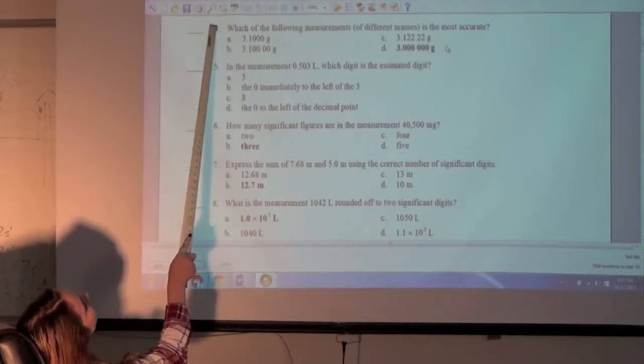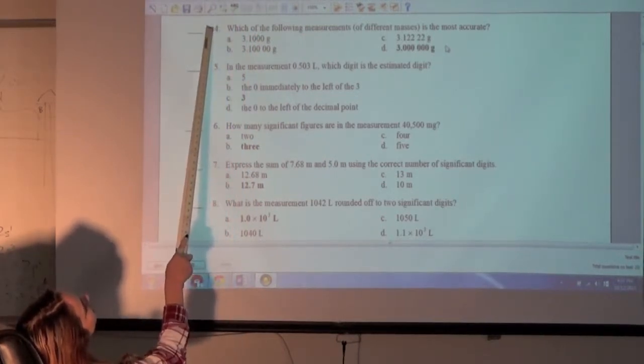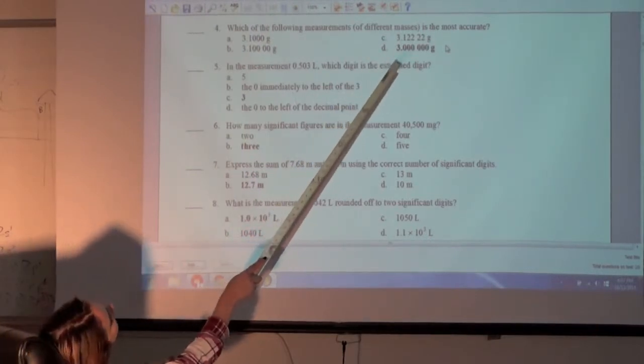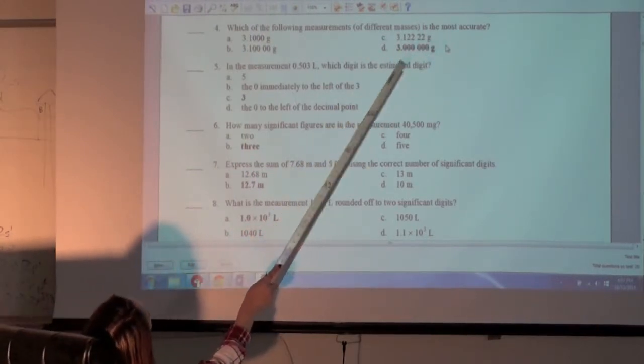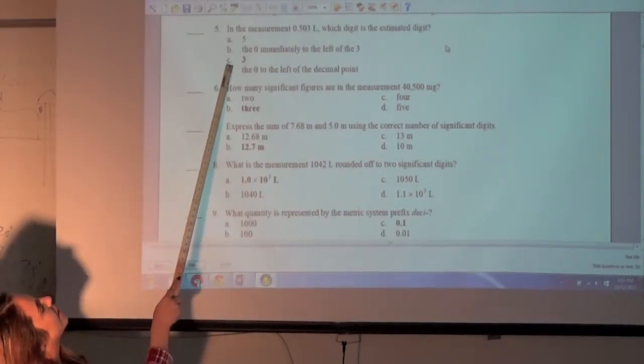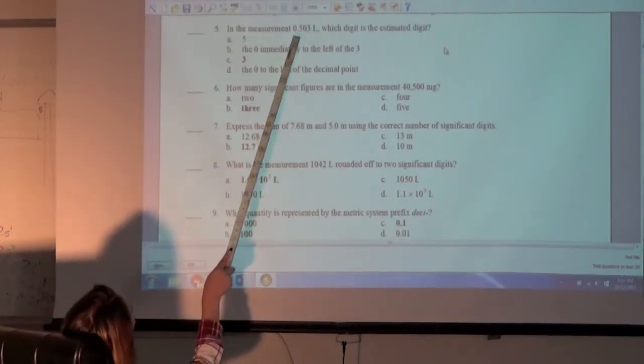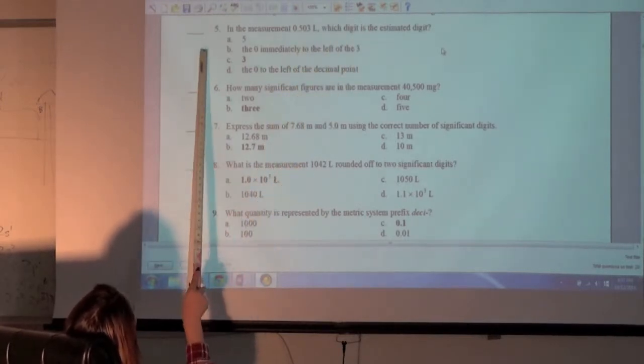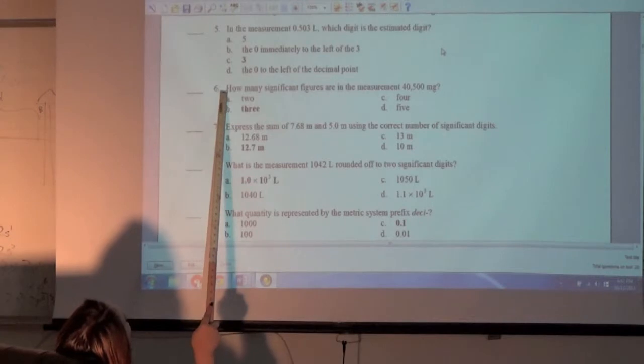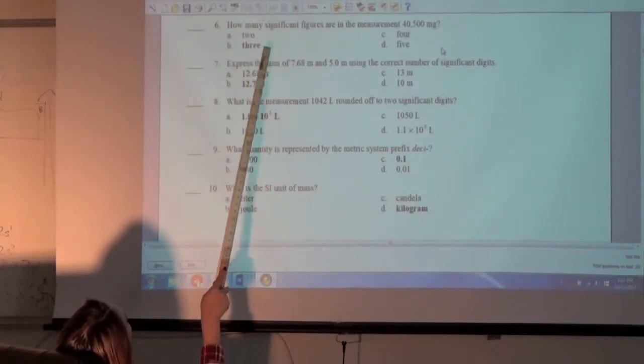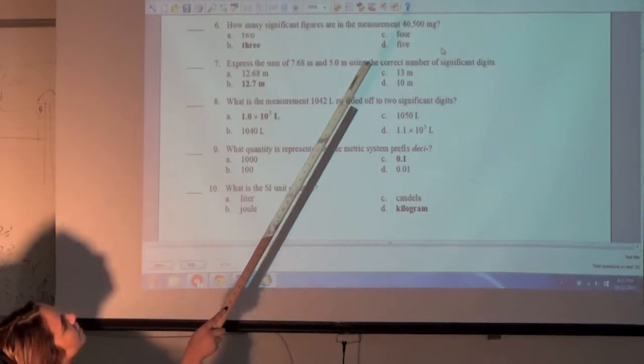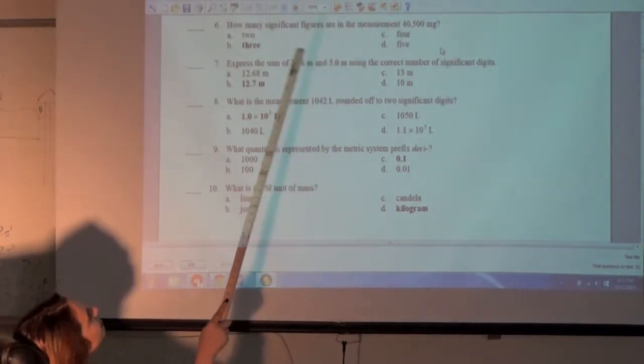Which of the following measurements of different masses is the most accurate? D, 3.000000 grams. Question 5, in the measurement of 0.503 liters, which digit is the estimated digit? C, 3. How many significant figures are in the measurement 40,500 milligrams? Three.